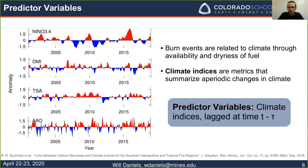Moving on to our predictive variables: we want to use variability in the climate because the climate is actually really closely tied to these large burn events. For instance, if you have a particularly dry season, your vegetation is going to get dried out and be more likely to burn. Fortunately, there are metrics that summarize periodic changes in the climate called climate indices. This plot to the left is showing four climate indices we're using. The first, the Niño 3.4 index, summarizes the El Niño–La Niña oscillation — basically a slight fluctuation in temperature in the Pacific Ocean.